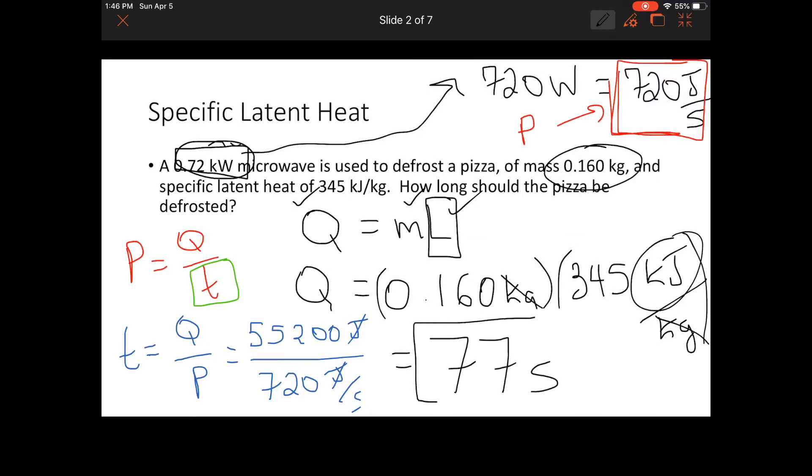So that is how long it would take to defrost this mass of pizza, given that the physical property of this pizza, it has a specific latent heat of 345. And we know that the microwave has a power rating of 0.72 kilowatts.